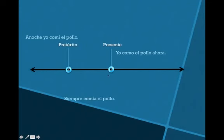Here's the pretérito — in the past, a specific point on this timeline. Our example sentence says: Anoche yo comí el pollo — last night I ate the chicken. We know that it was last night; it's a specific spot on this timeline. But it gets tricky when we want to talk about something that we always did. Siempre comía el pollo — siempre meaning always. Now it's not one point on the timeline; it's more like several points, or we don't really know when it's stopping and starting. It's just always.